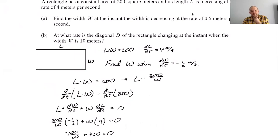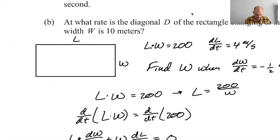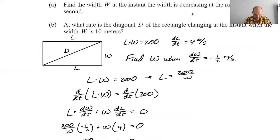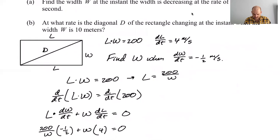At what rate is the diagonal D of the rectangle changing at the instant when the width W is 10 meters? So we want to find something, first of all, I need, I need like, okay. So the diagonal, draw that in or diagonal. So this is D, this is L. So I know that D squared equals L squared plus W squared, which might be the good way to go with that.